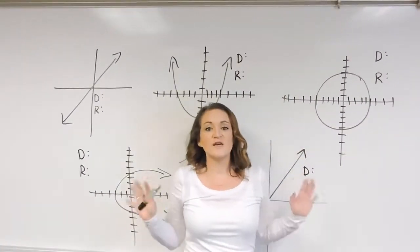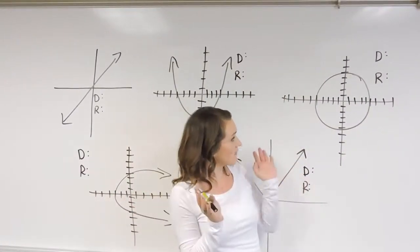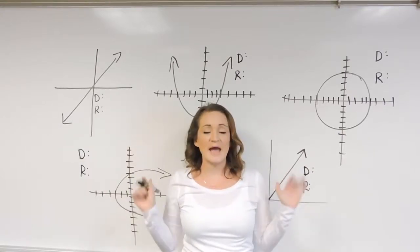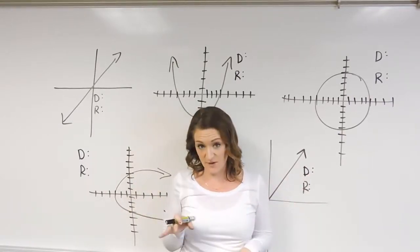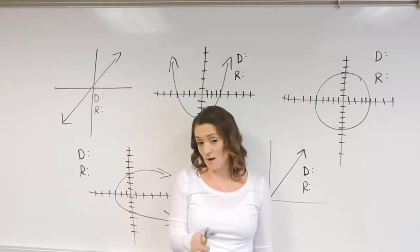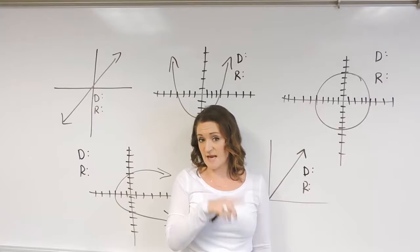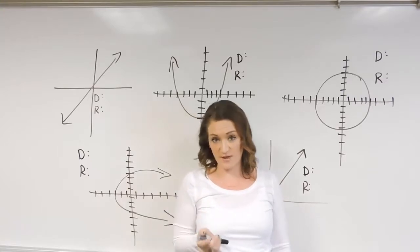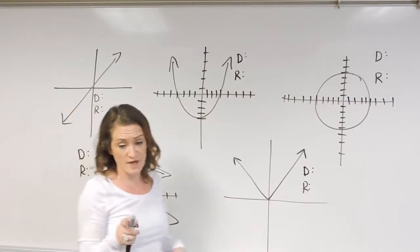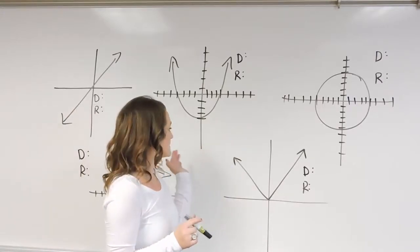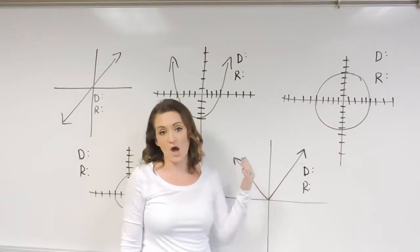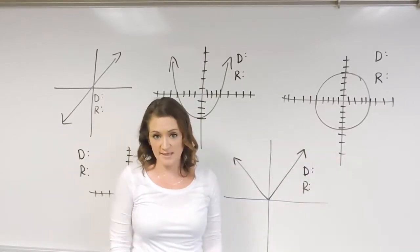Let's figure out if we have a function given a graph. Up on the board I have a few different examples of some different graphs, and we're being asked are they a function or not, and also to state the domain and range. When it comes to figuring out if a graph is a function, the main test used most often is called the vertical line test.